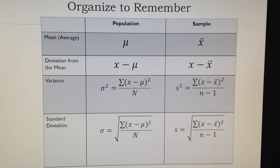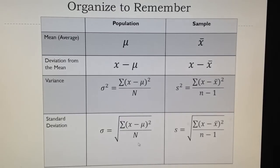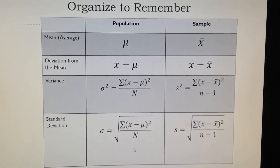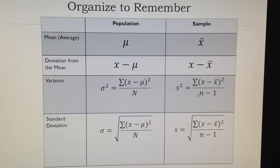The square root of the variance is a very important characteristic of the distribution around the mean, called standard deviation. Under the root square, on top you have the sum of all squared deviations, and on the bottom you have n. The formulas are almost identical — the difference is n minus 1 for samples, and mu versus x-bar, where mu is the average for the population and x-bar is the average for the sample.